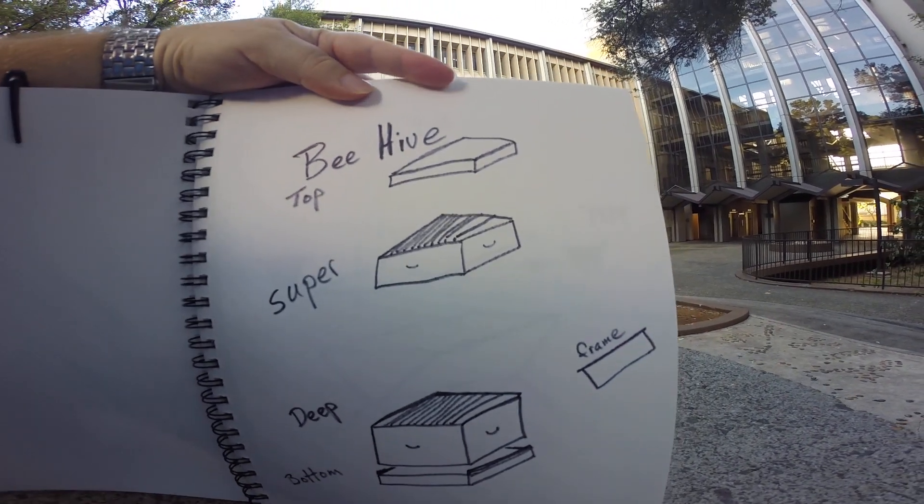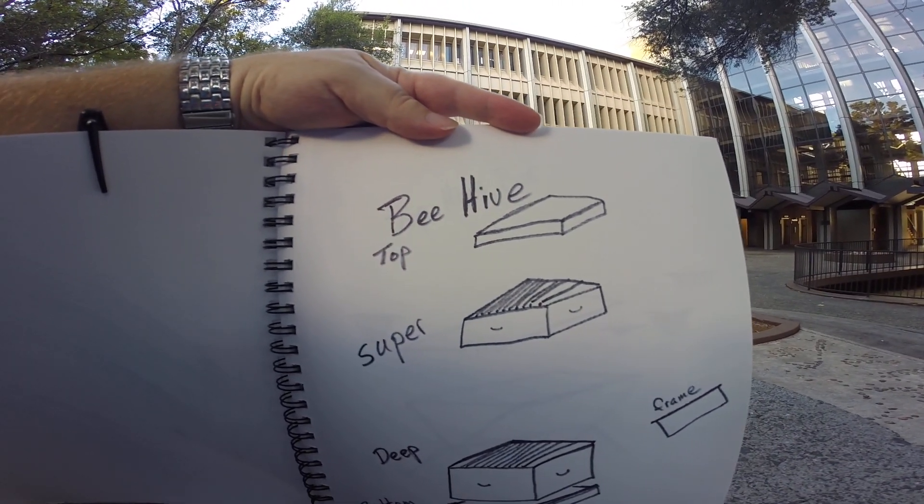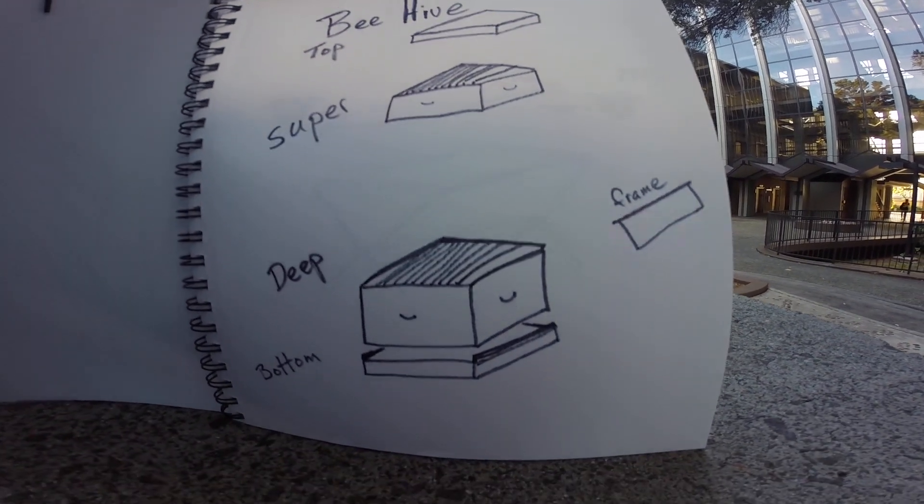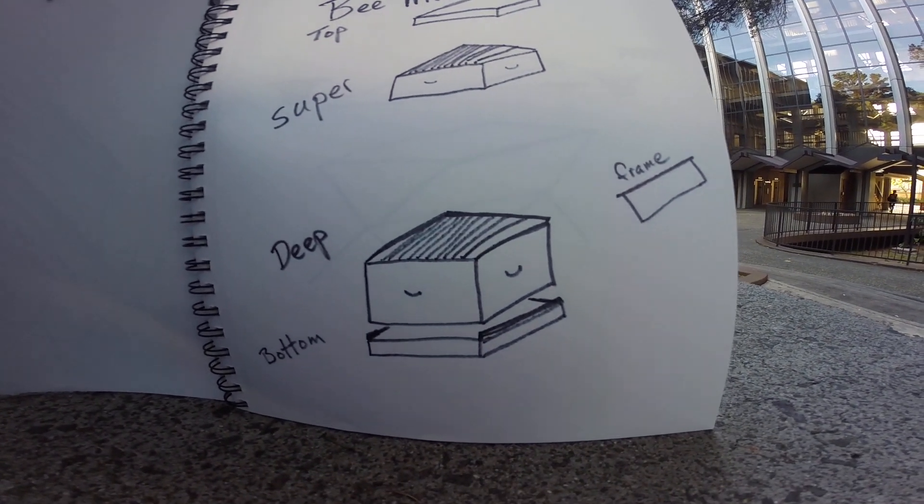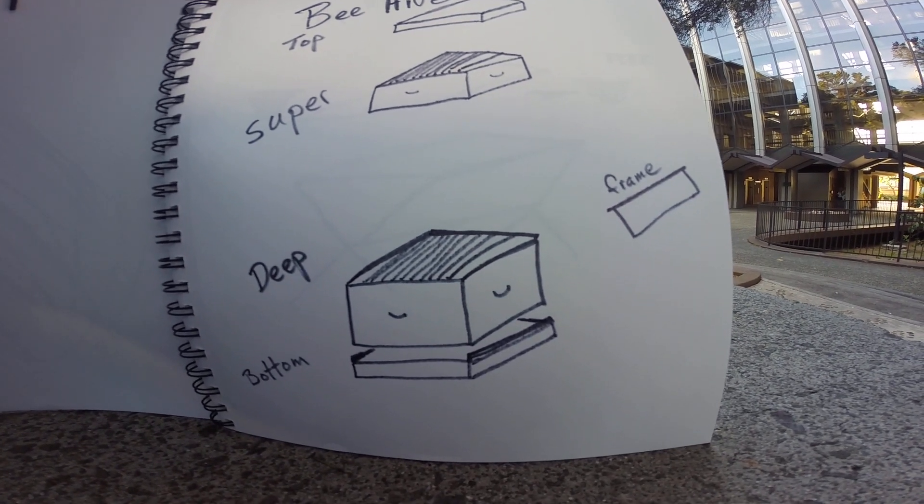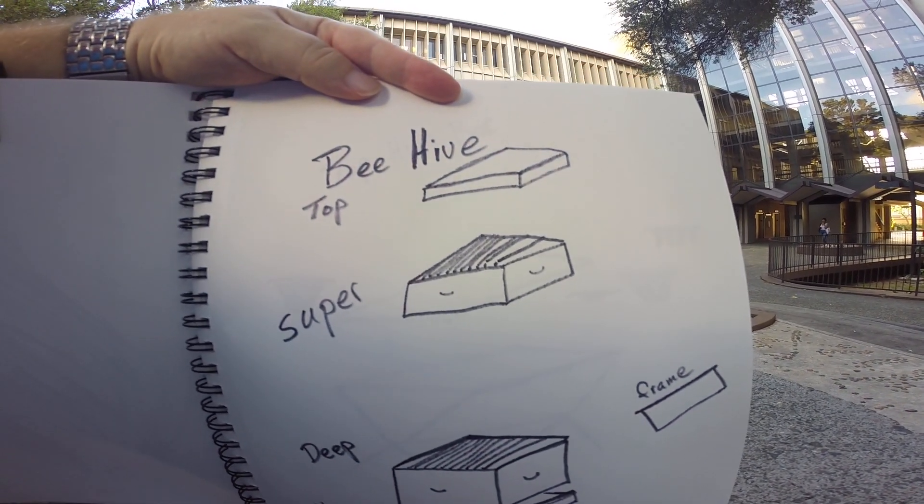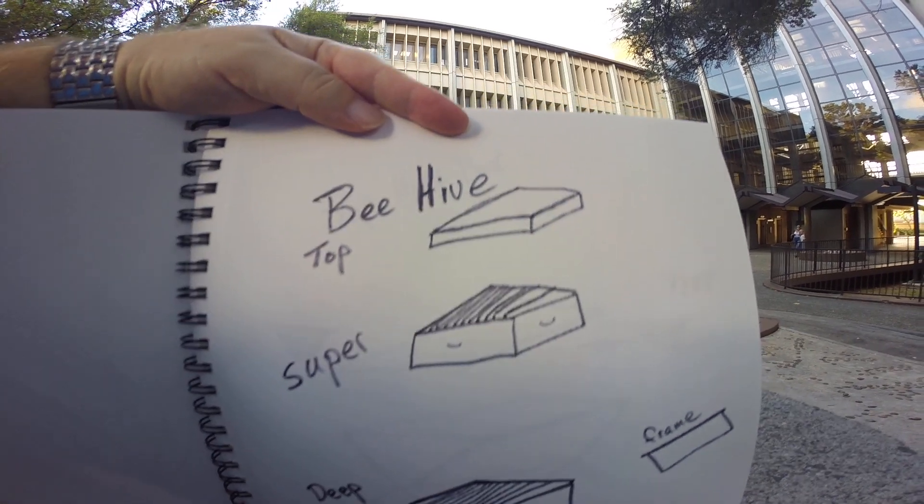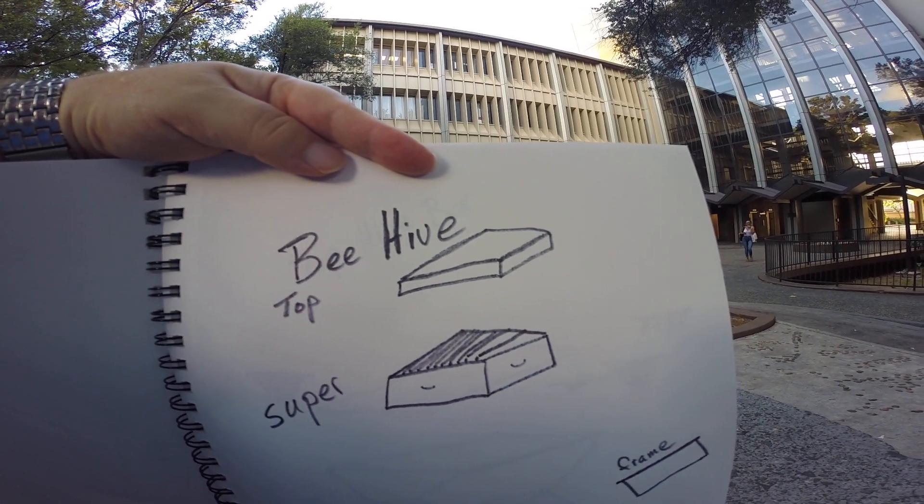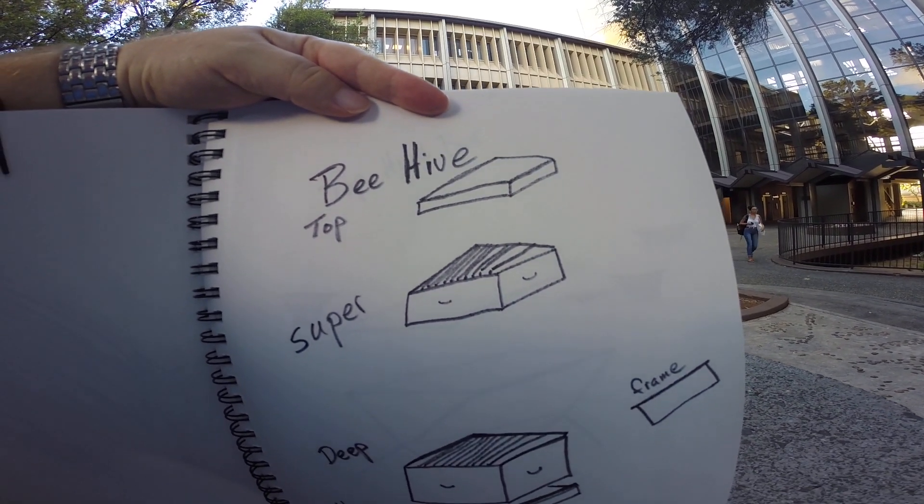Many people choose to use the typical beehive with a standard bottom, normal deeps which hold brood, supers which hold honey, and a top lid box to make the best beehives.